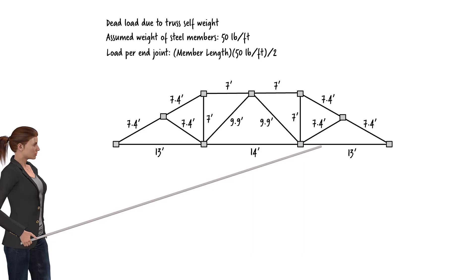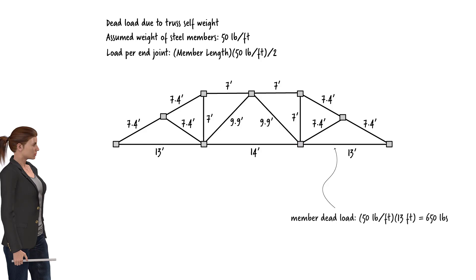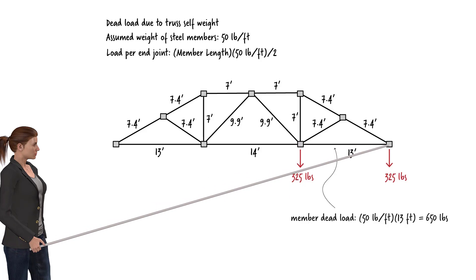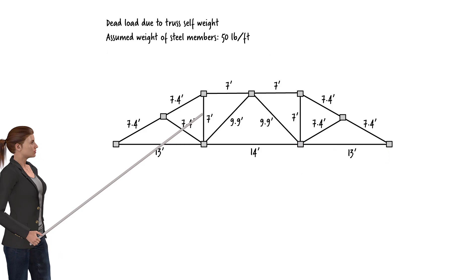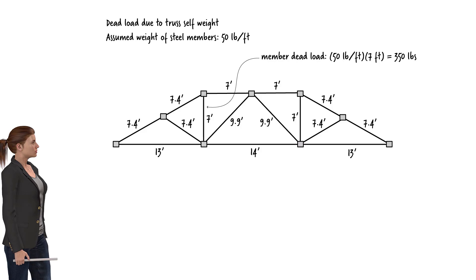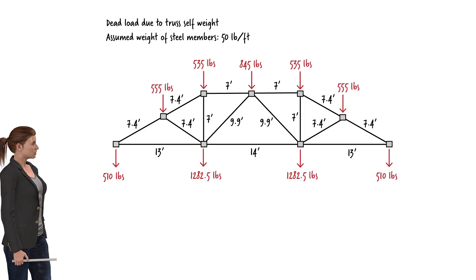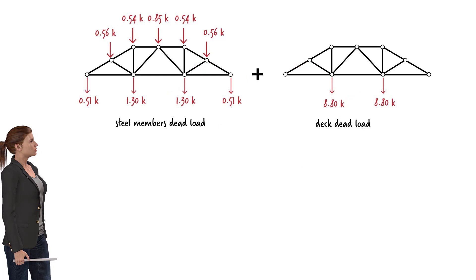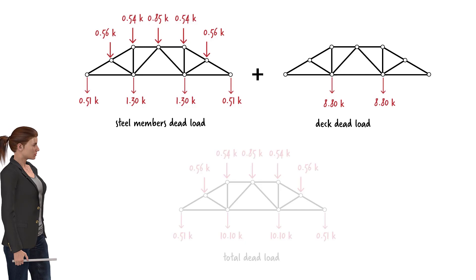For example, the dead load of a 13-foot member is 50 times 13, or 650 pounds, placing 325 pounds at each end joint. Similarly, the dead load for a 7-foot member equals 350 pounds, placing 175 pounds at each end joint. We get a load diagram when we superimpose the truss member weights and cross beam weights at the joints. Adding the joint loads due to the weight of steel to the joint loads due to the weight of the deck, we get the total dead load the truss must carry.